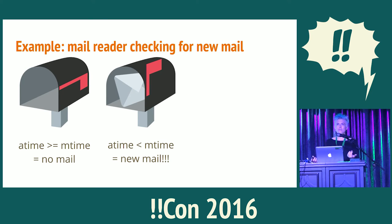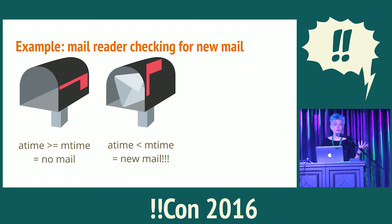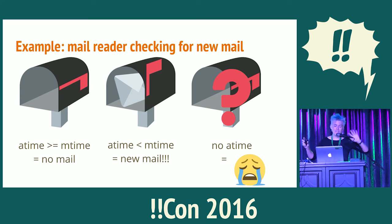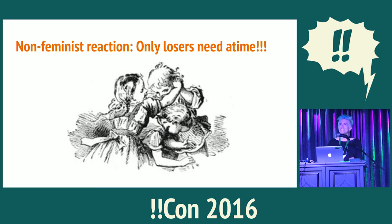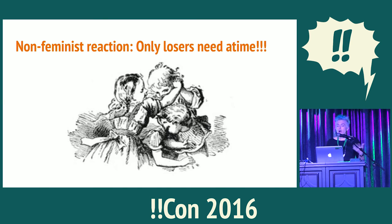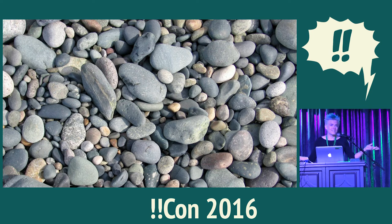An example of a program this breaks is the mail reader: A-Time greater than M-Time means no mail; A-Time less than M-Time means new mail. If you have no A-Time updates, you have no idea — there's never any mail. Whenever you would complain about this, a bunch of file systems programmers would sneeringly explain how you needed to rewrite your application not to use A-Time. And this is true — every application that used A-Time could be rewritten. We could also rewrite every application to not use file systems, or just throw away our computers and use rocks. I'm a file systems developer. I want to make stuff for people to use.